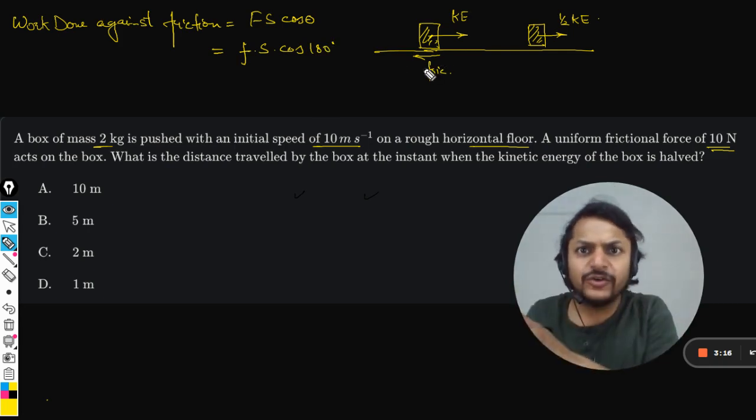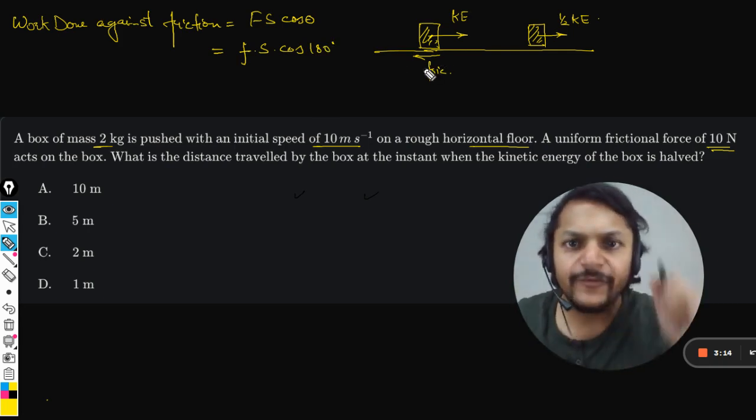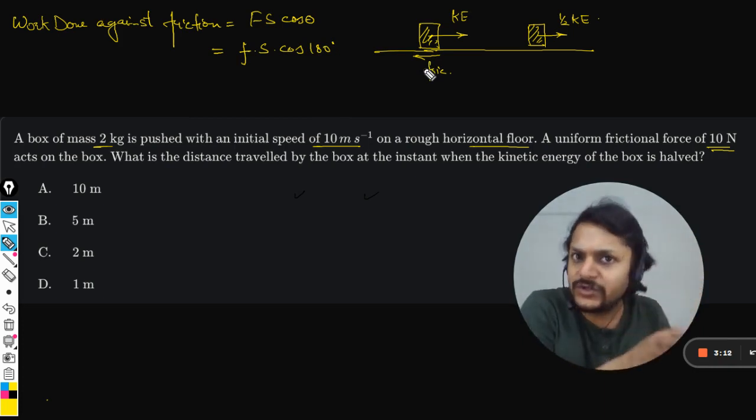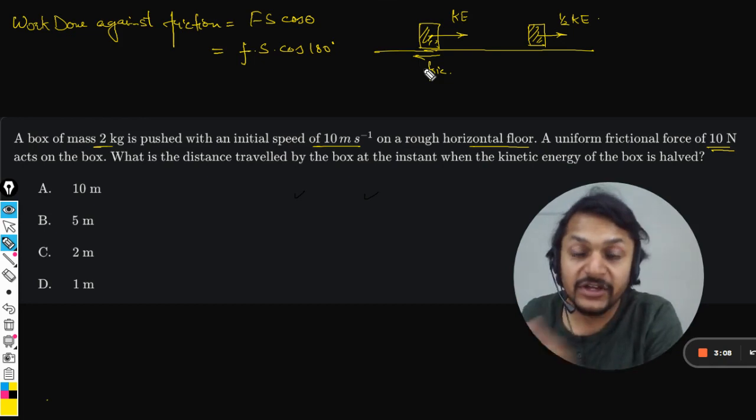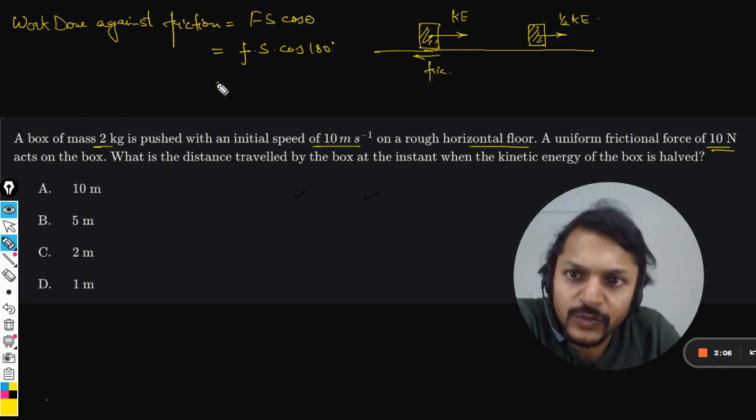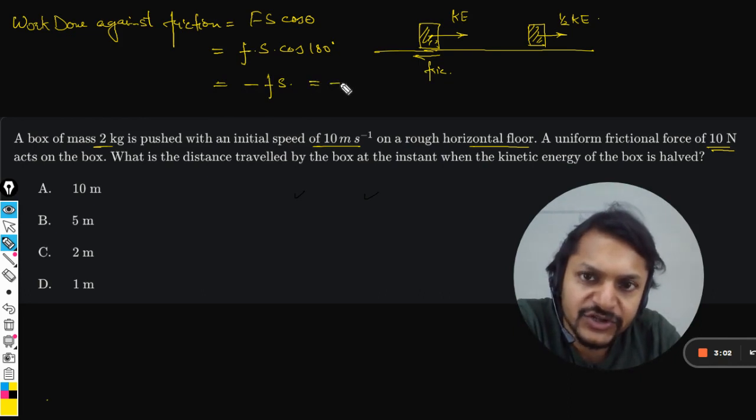So the body is moving towards the right, displacement is towards the right, but the force is acting towards the left. The angle is 180 degrees. Cos 180 is negative, so it will be minus FS. Friction is 10, and we need to find the displacement.